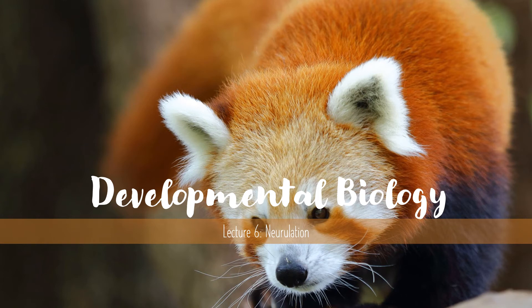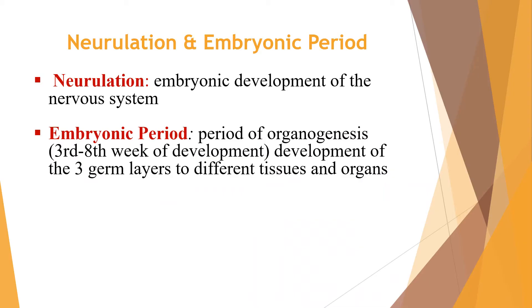The next part of this lecture will be about neurulation. Neurulation is the embryonic development of the nervous system. The embryonic period is the period of organogenesis, from the 3rd to 8th week of development, covering the development of the three germ layers to differentiate tissues and organs.